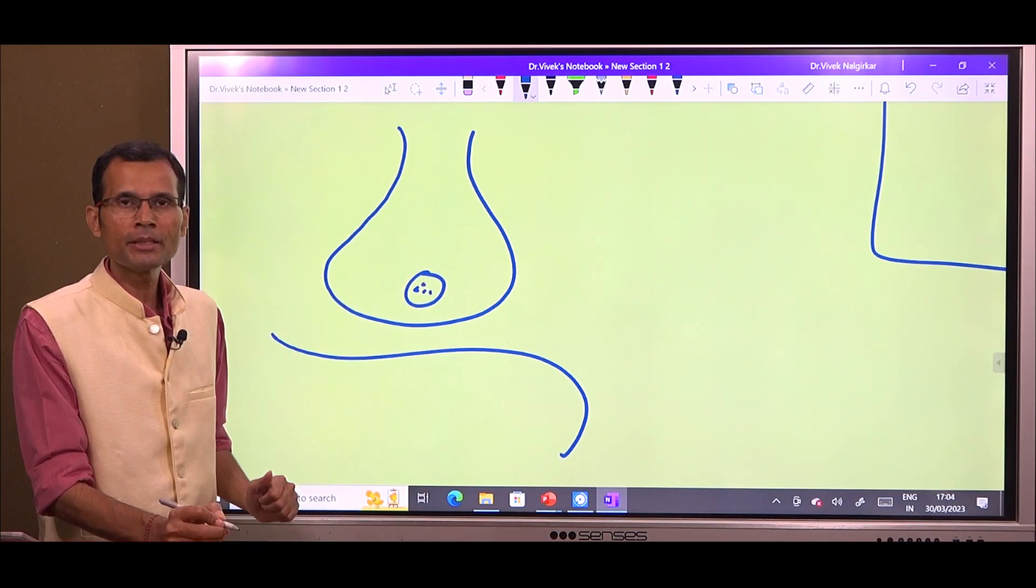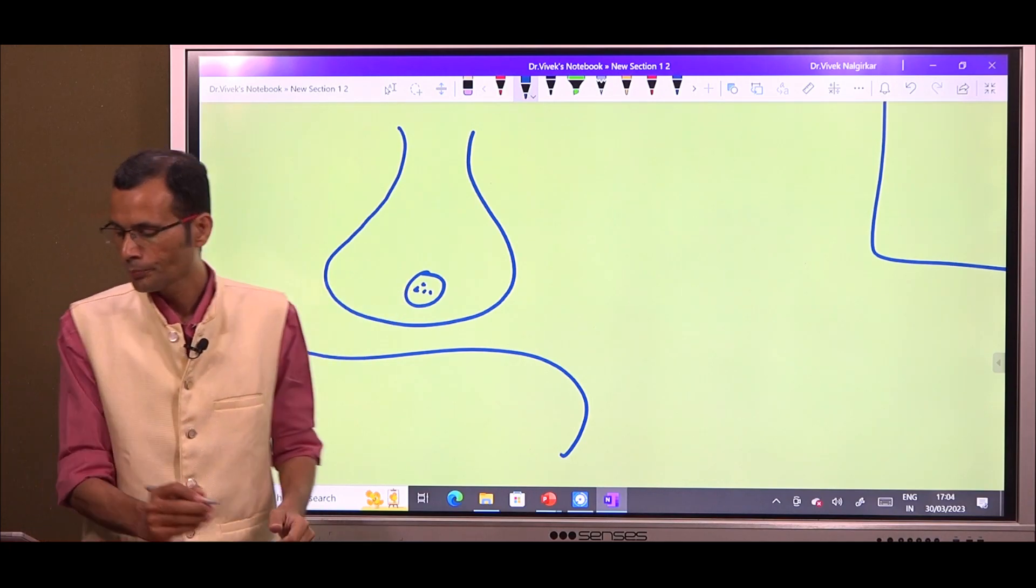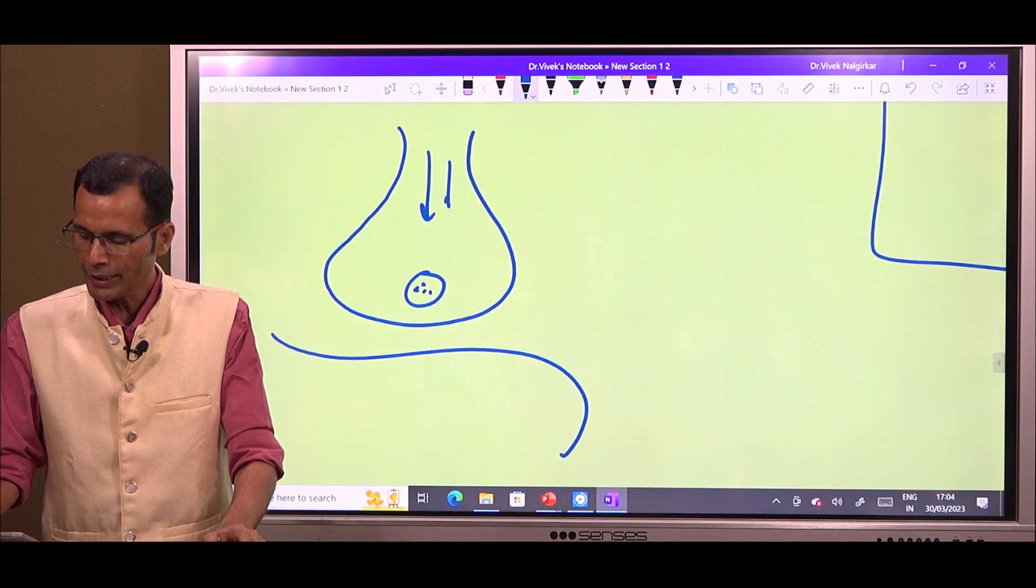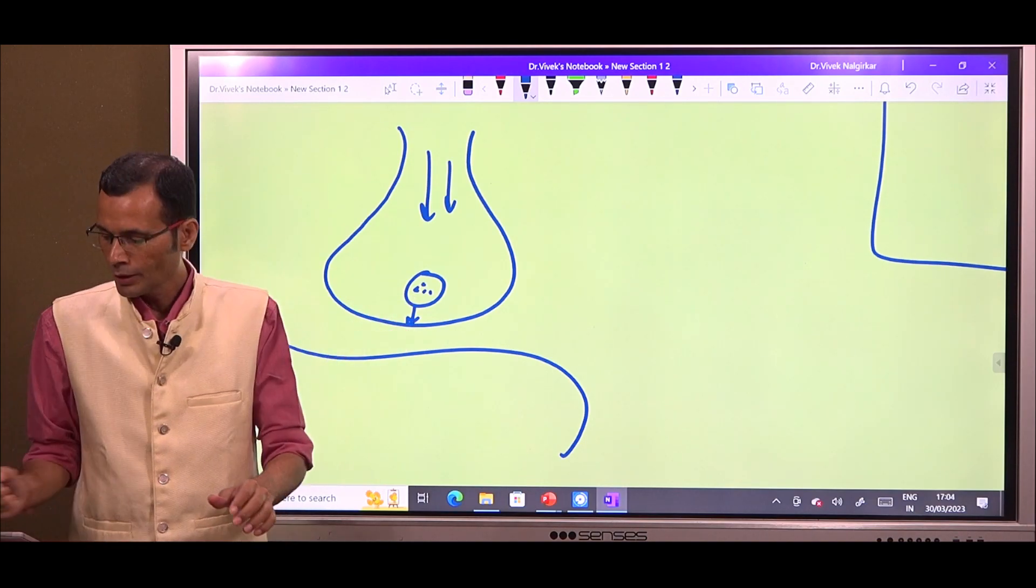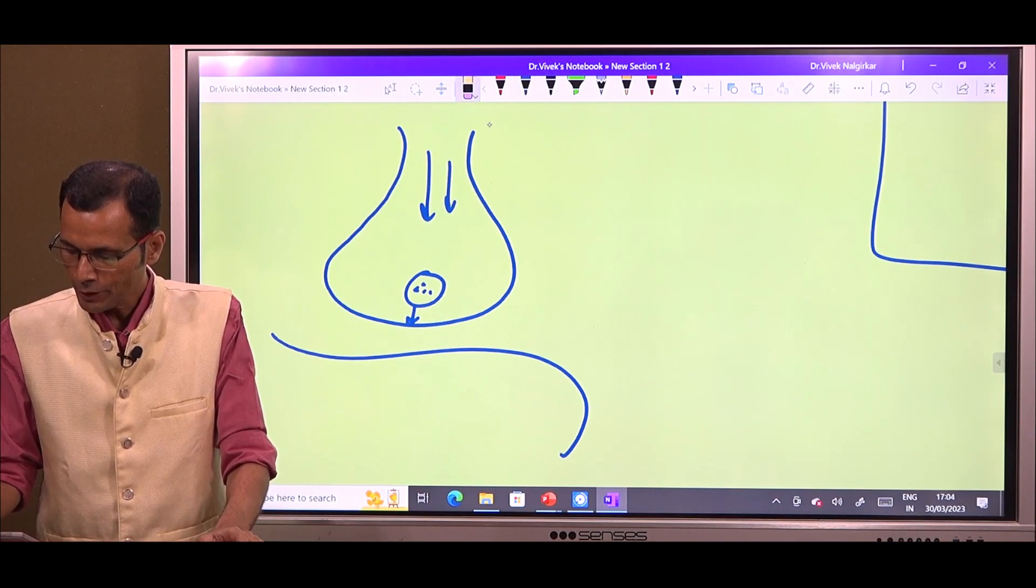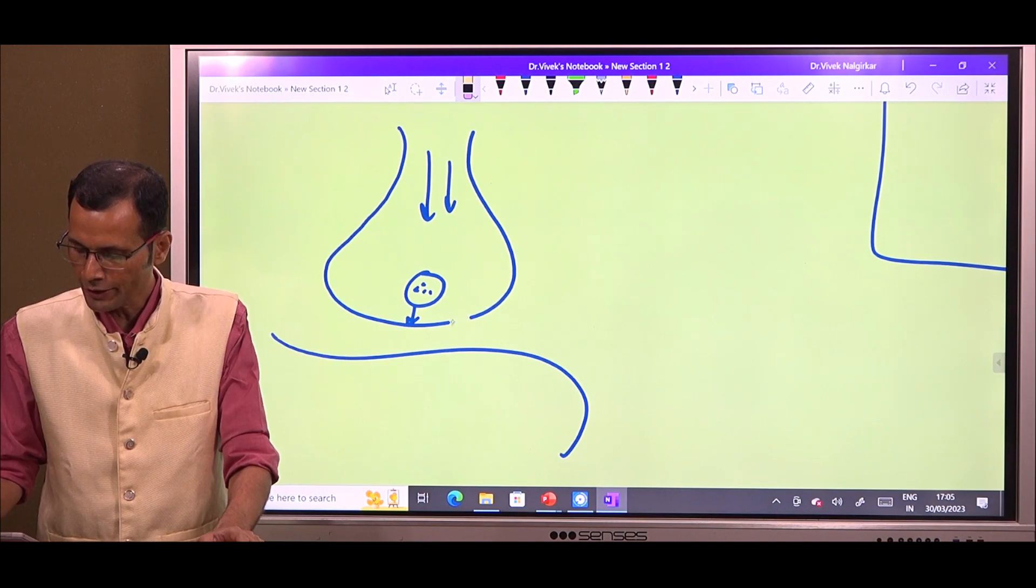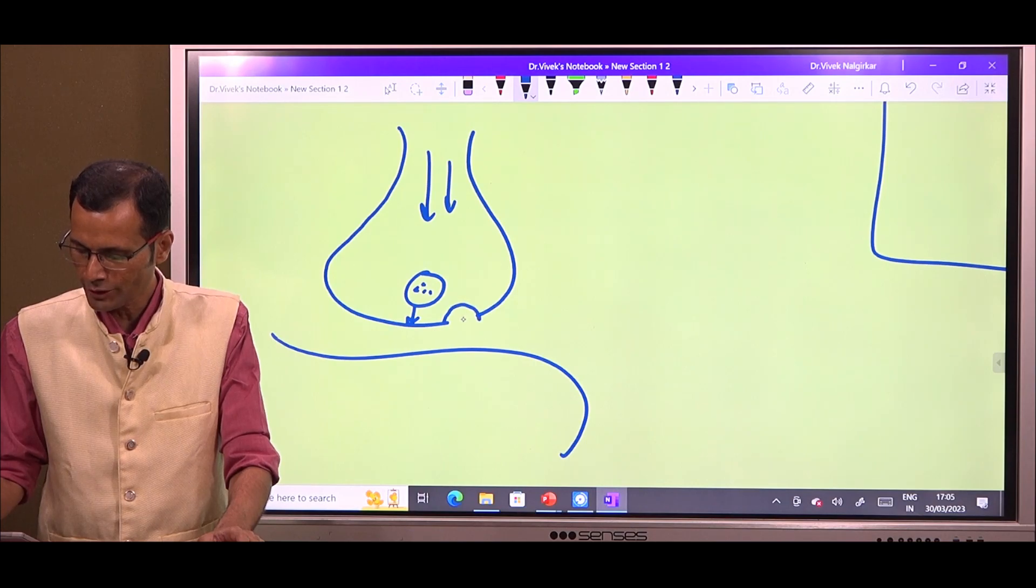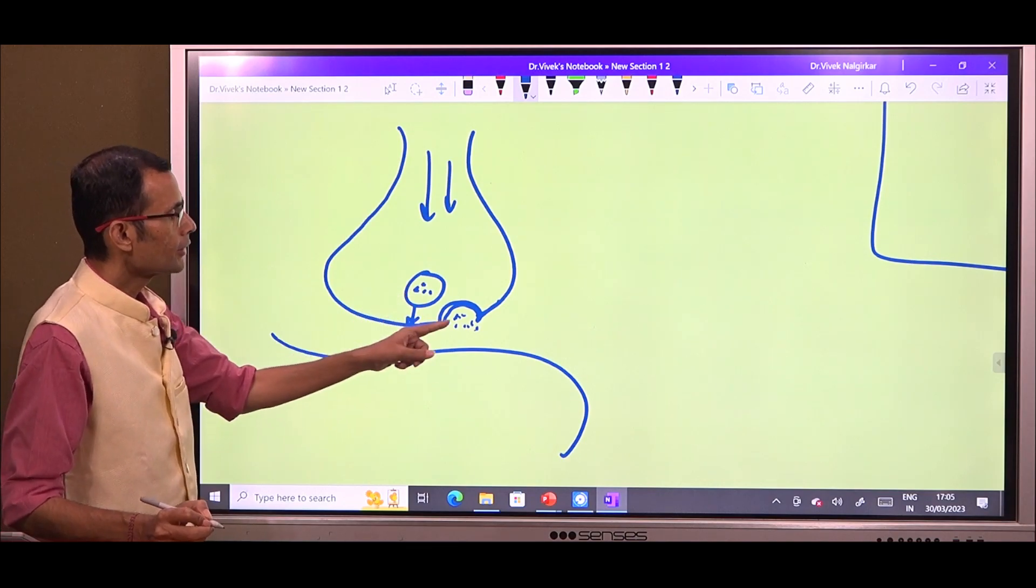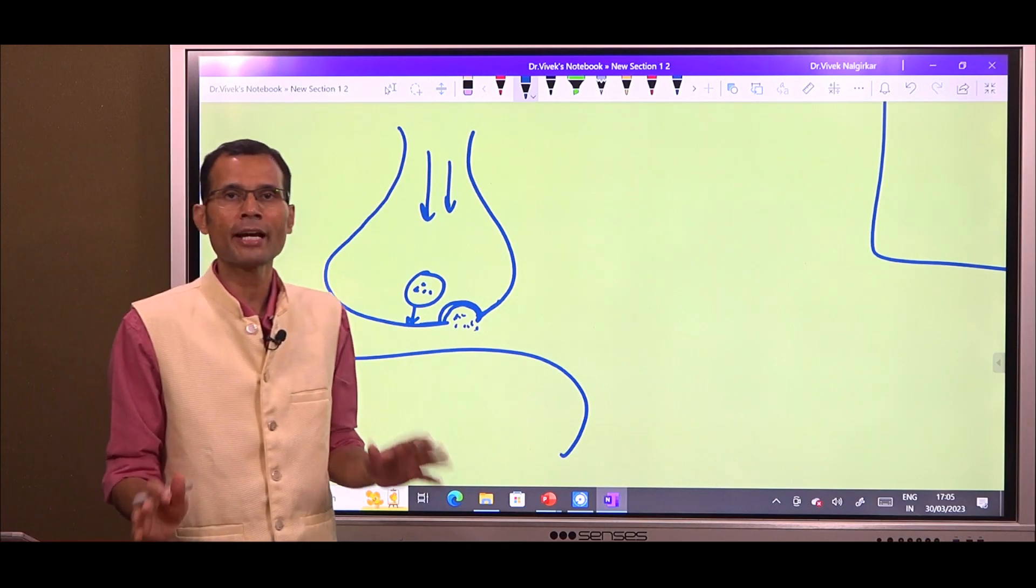Here is a presynaptic terminal, it contains vesicles filled with the neurotransmitter molecules. Whenever impulse arrives, this vesicle will migrate towards the presynaptic membrane, then it will open up to the exterior and it will discharge the contents, it will release the neurotransmitter by the process of exocytosis like this, making an omega shape like this and neurotransmitter will be released into the synaptic cleft by the process of exocytosis.